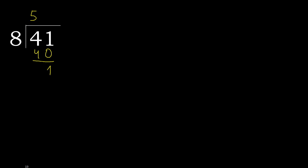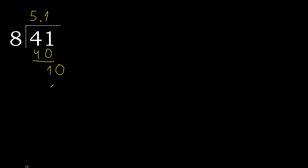That is not a whole number, therefore complete — always complete with 0, here with a point. 0 point. 10. 8 multiplied by 2 is 16 — 16 is greater. 8 multiplied by 1 is 8 — is not greater. Subtract.